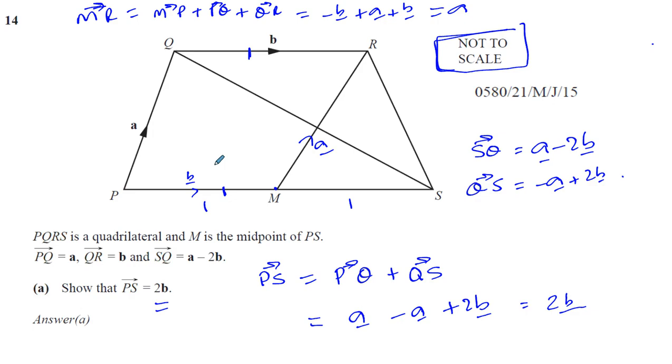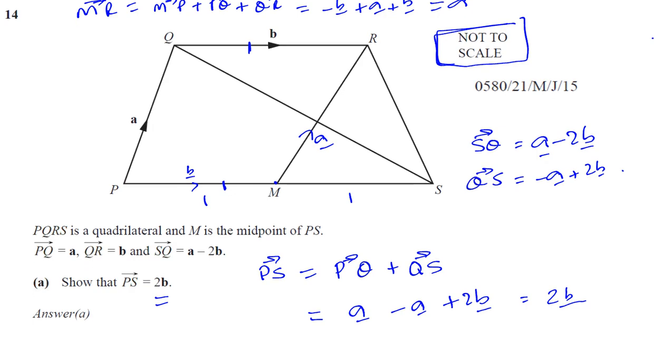So it's a parallelogram. These lines are parallel and equal in length. So PQ and MR are parallel, even though they don't look it, they're parallel and they're equal in length. And QR and PM are parallel and equal in length. But there's nothing to say that A and B are the same length. So we can't say it's a rhombus. The best we can say it is a parallelogram.